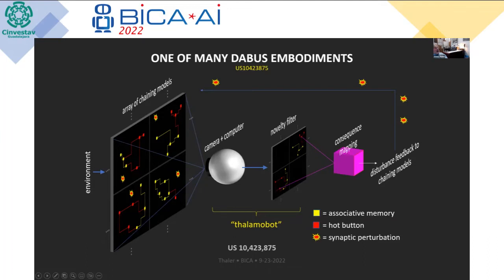Another system — either neural networks or a simple detector — foveates the whole scene looking for resonance of the hot buttons within the array of associative memories. The consequence map (the purple box) is then able to inject simulated neurotransmitters into the system to either trigger learning or trigger the fragmentation of previous ideas, mutate them, and combine them into whole new ideas. I typically call the camera plus novelty filter combination the thalamabot, to emulate essentially thalamic function.